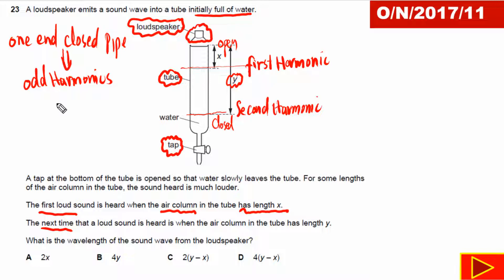So what exactly does odd harmonics mean? It means that first harmonic or the first loud sound we will hear when the length of air column is equal to lambda by 4, and the second harmonic we will hear when L is equal to 3 lambda by 4.